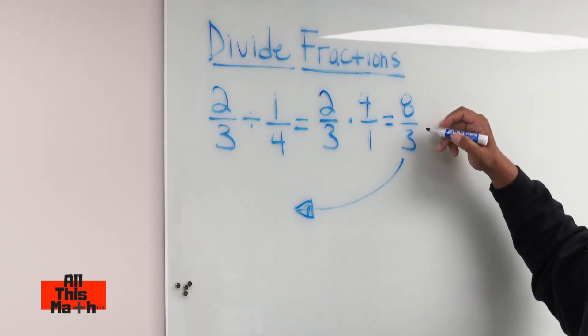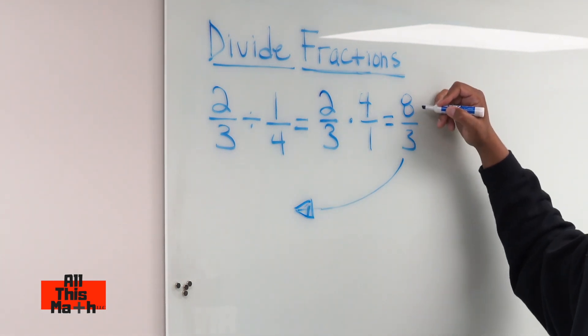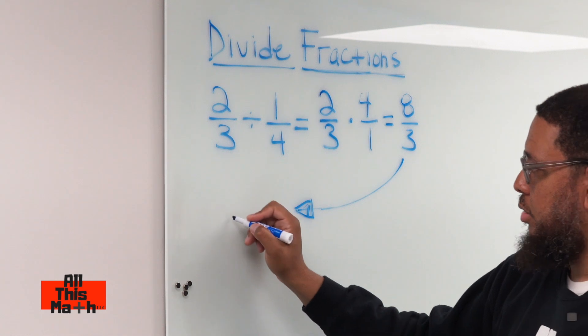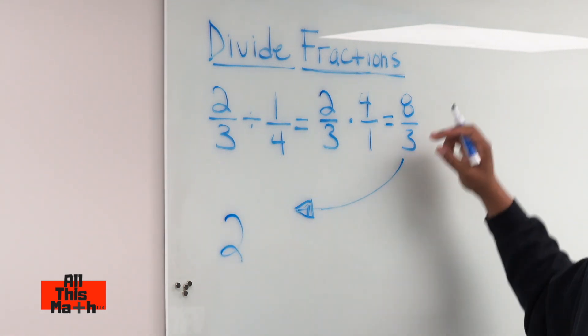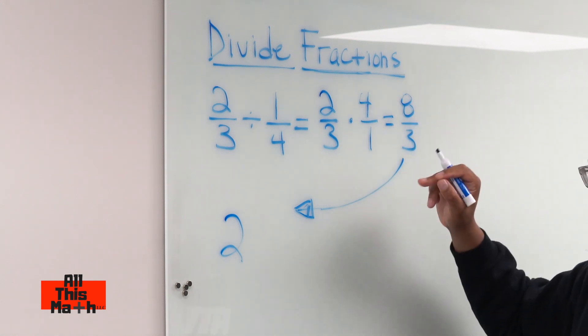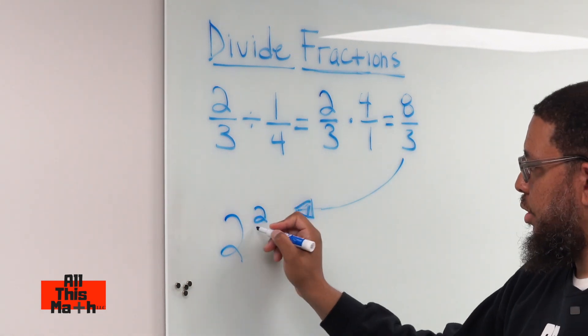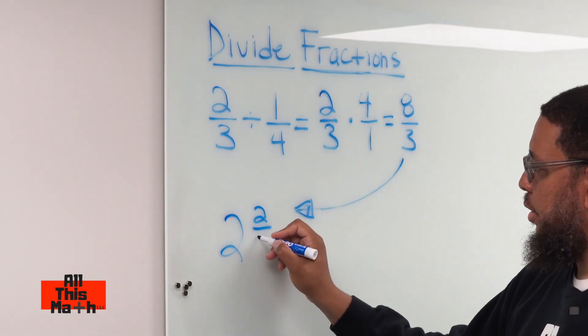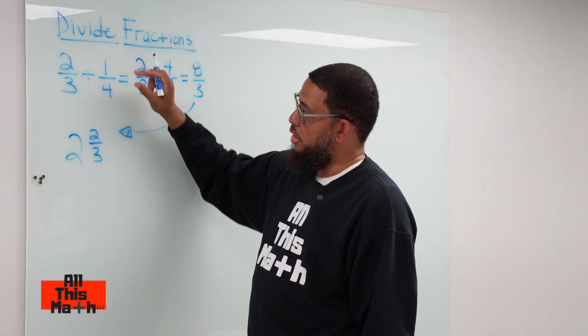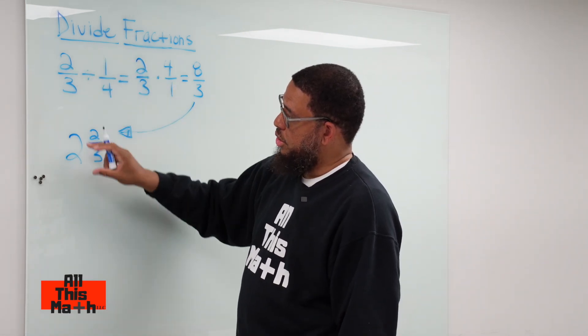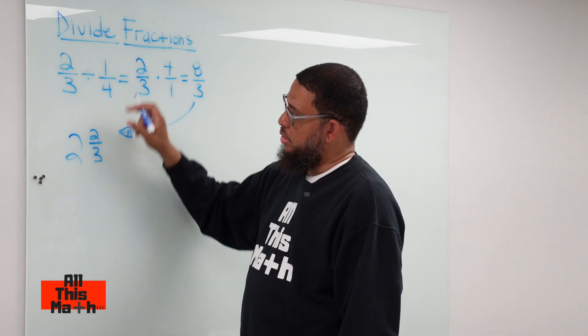By doing this, thinking about, how many threes can fit into eight? Two threes can fit into eight. So that's going to be our whole number. And then since two times three is six, the difference between eight and six is two. So two is going to be our numerator and then we keep the same denominator. So this is how many quarters or fourths can fit into two-thirds. Two of them and a piece of another one.